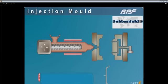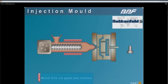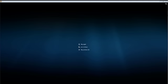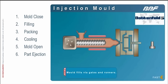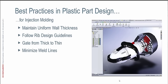What we're looking at today are the design considerations for the injection molding process — not just any plastic parts, but plastic parts designed for injection molding. When we talk about injection molded plastic parts, there are at least a few main things you always want to keep in mind: number one, maintain a uniform wall thickness; two, follow proper rib design guidelines; always gate from thick to thin; and always try to minimize weld lines.